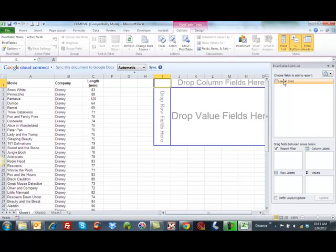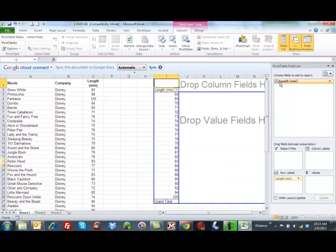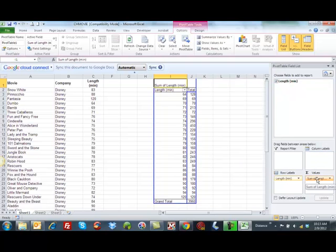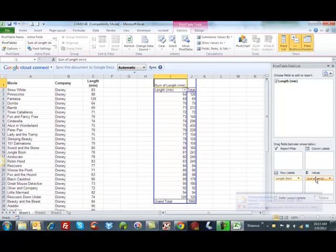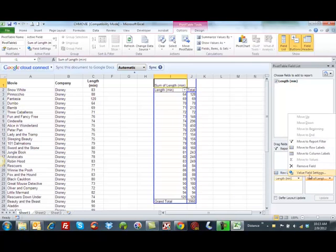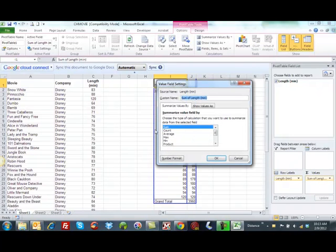And it asks us, well where's the range of information we're interested in? And we're really only interested in the length, so we highlight all that. And we're telling it we're going to put it on our Excel worksheet, so that's fine. Now I have my length. I'm going to drag it into the row labels. And I'm going to drag it into the sum values.